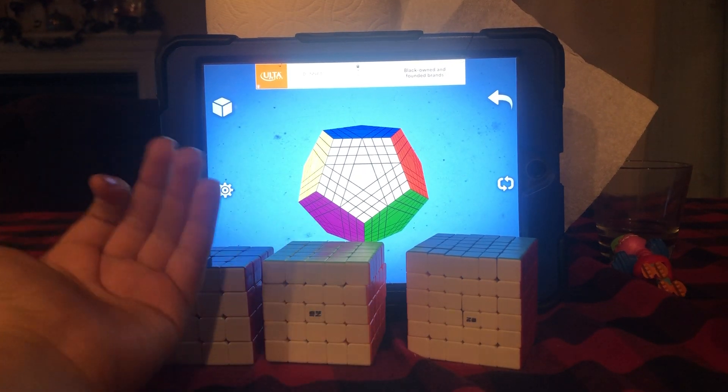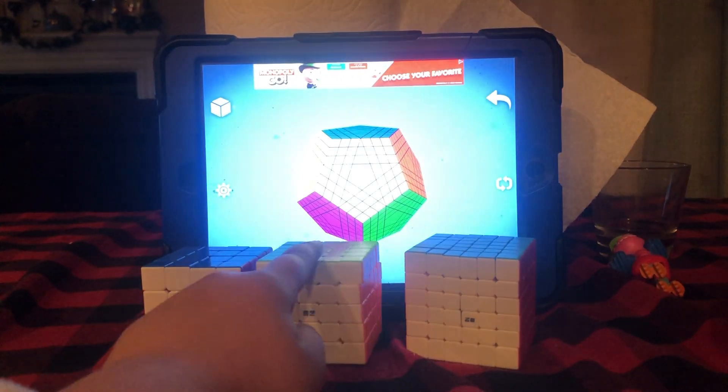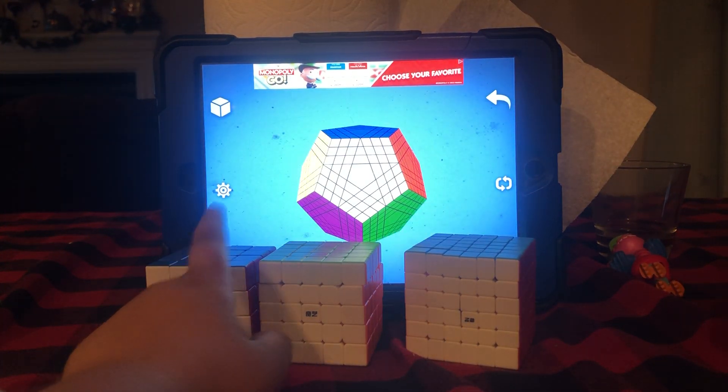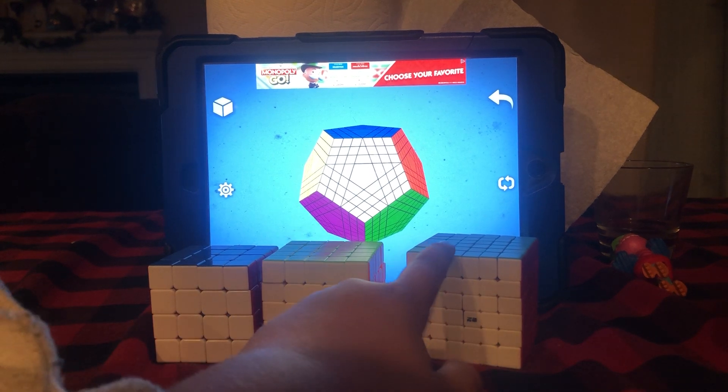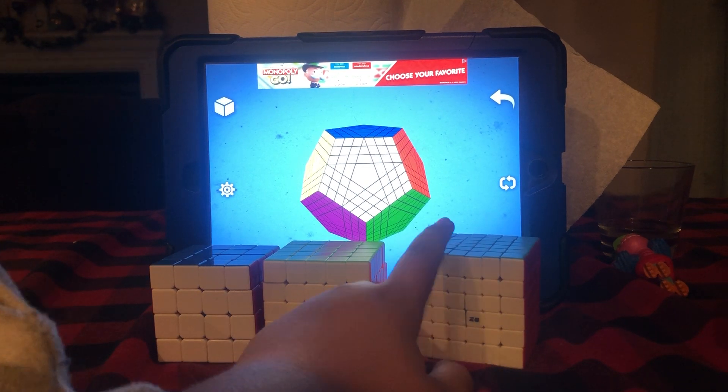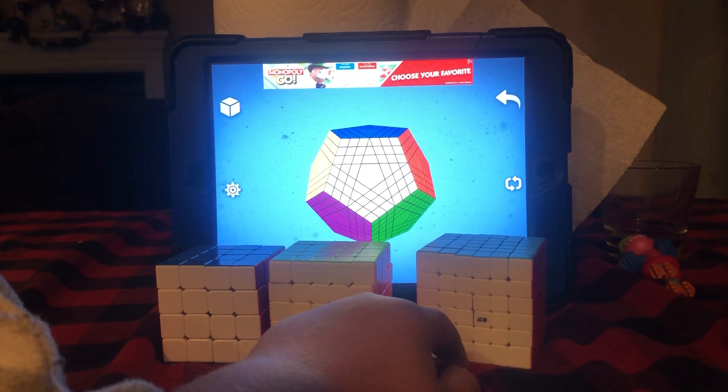The 4x4 and the 5x5 were both made by Rubik's in the 1980s. The V-Cube 6 came out in the early 2000s.